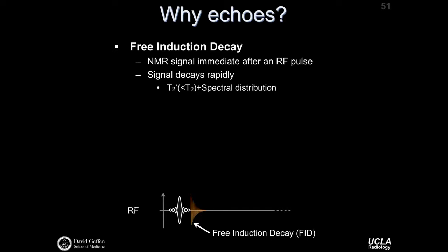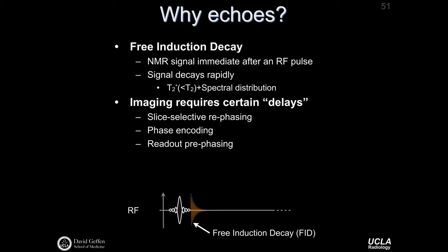So why do we need echoes? The free induction decay is the NMR signal immediately after an RF pulse, and that signal decays very rapidly — like T2 star, so reversible and irreversible losses, plus something we refer to as spectral distribution, meaning a distribution of Larmor frequencies within the voxel. Imaging requires certain delays. While the FID signal decays quickly, we need some delays to play additional gradients for slice-selective re-phasing, phase encoding, and readout pre-phasing. These gradients also induce field inhomogeneities that contribute to even further spin dephasing.